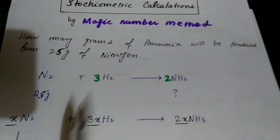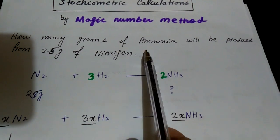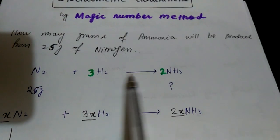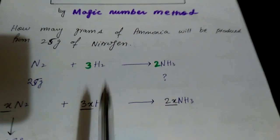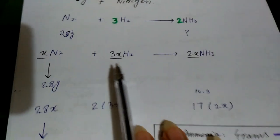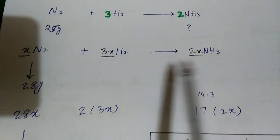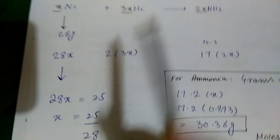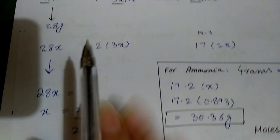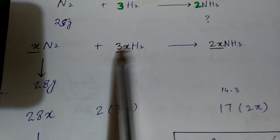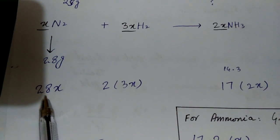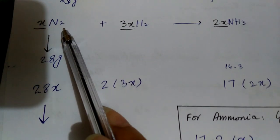Let's understand it with a simple example. We have to find out the number of grams of ammonia — how many grams will be produced if we have 25 grams of nitrogen. First we have to balance the equation. We have to balance it with x. After that, since we have been given the mass, we will find out the value of x.